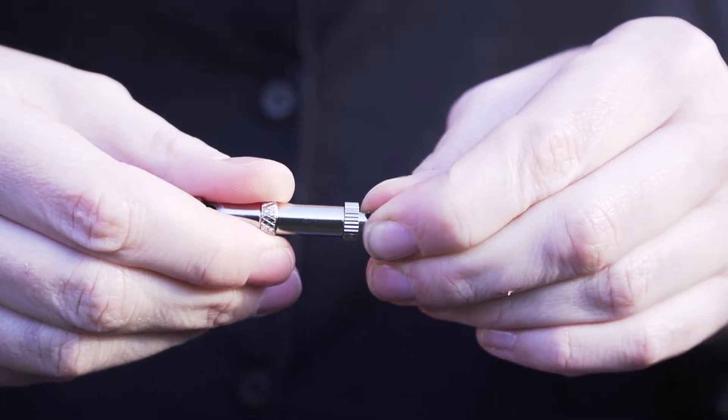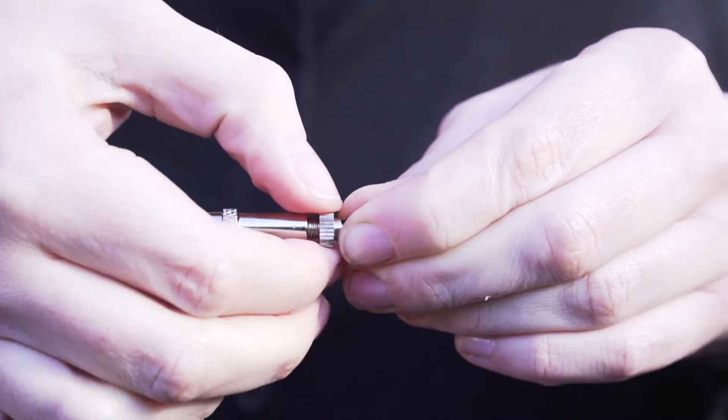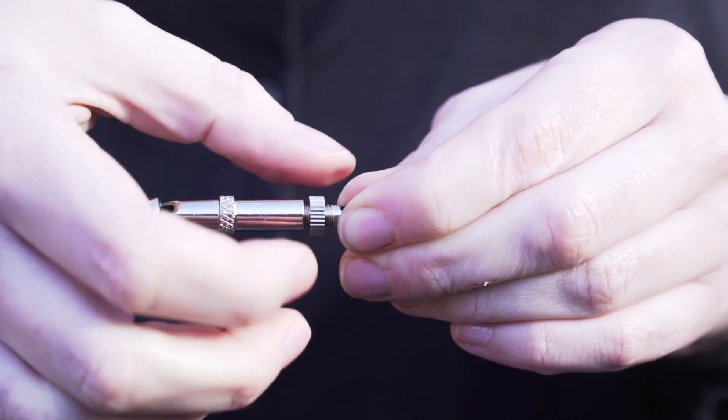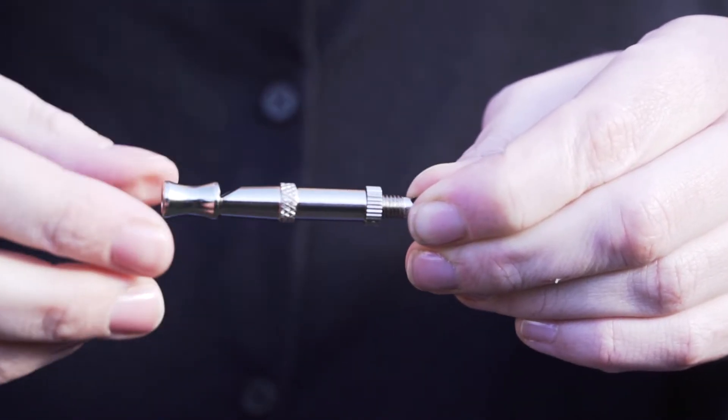You can adjust the pitch of CatPhone by unscrewing the pitch adjuster on the whistle and locking it in place using the nut. Your CatPhone will now produce its own unique sound.